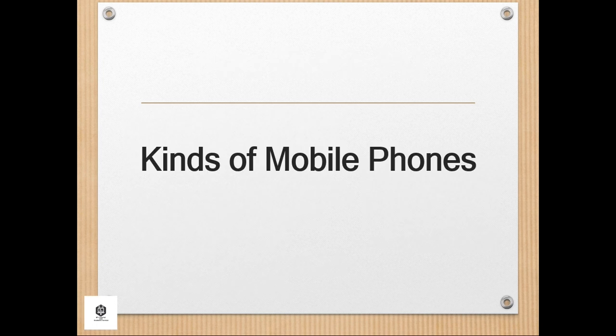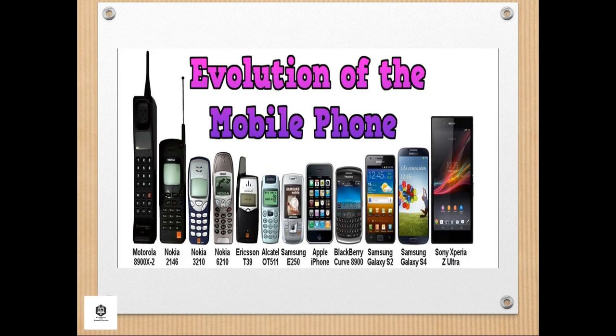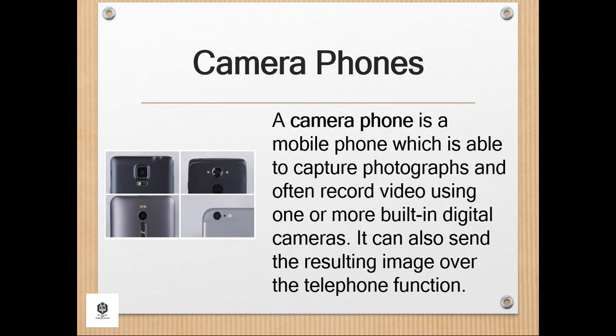Let's proceed to the kinds of mobile phones. First, the camera phones. A camera phone is a mobile phone which is able to capture photographs and often record video using one or more built-in digital cameras. It can also send the resulting image over the telephone function. The first commercial camera phone was the Kyocera Visual Phone VP-210, released in Japan in May 1999. It was a cordless phone, as distinct from a cellular mobile phone.